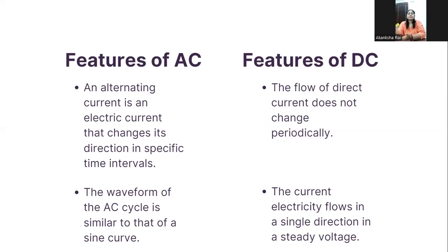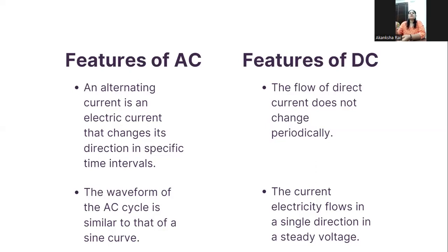These are the two things we have to change. So when we use the rectifier, what do we do first? We change the direction. That will give us a unidirectional current, which is one of the features of our DC voltage.